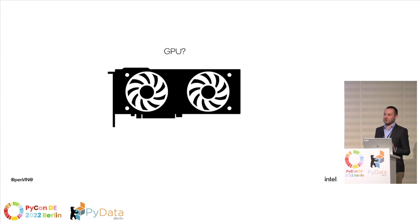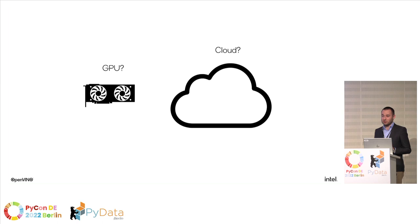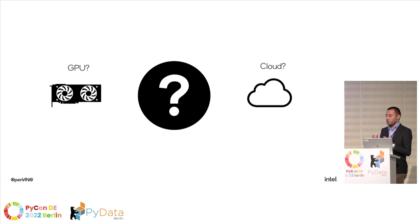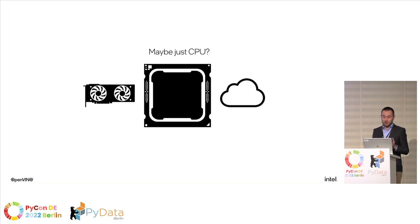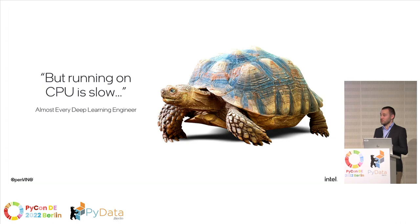What if you would like to deploy on a Raspberry-like device? Is there something cheaper and available on the edge? Maybe just the CPU you probably already have. But running on CPU is slow — almost every deep learning engineer knows that. Or does it still hold true? Let's check.